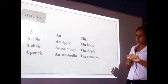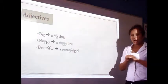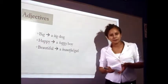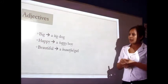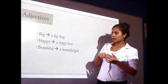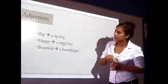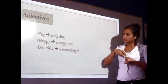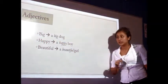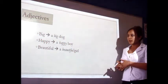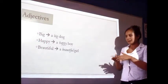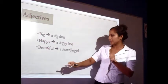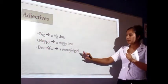Another part of speech are adjectives. Adjectives are words that we use to describe, modify, or qualify a noun. Examples of adjectives include: big, happy, and beautiful. For example, 'a big dog' describes that the dog is big. 'A happy boy' is describing a boy, and 'beautiful' is describing a girl.